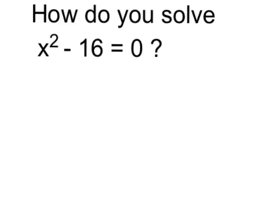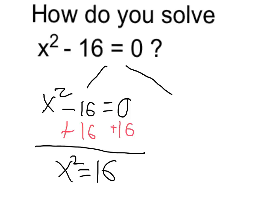There are a couple ways we can think about this problem. I think perhaps the most intuitive is to get the x squared by itself. I can do that by adding 16 on both sides, and of course that's going to give me x squared equals 16.